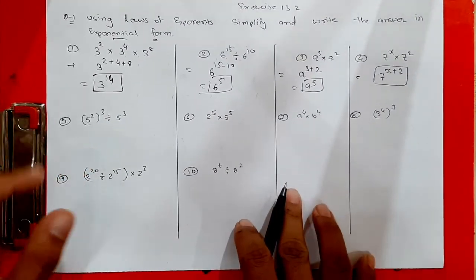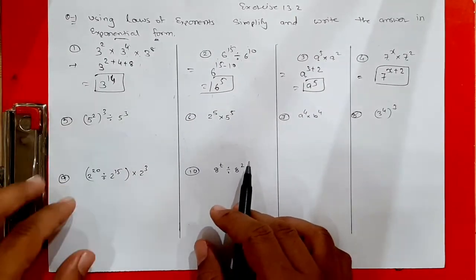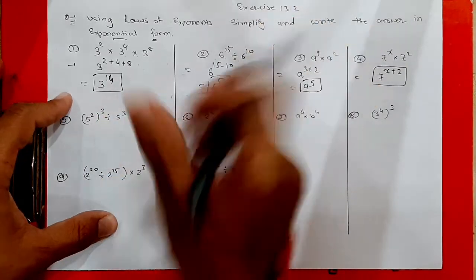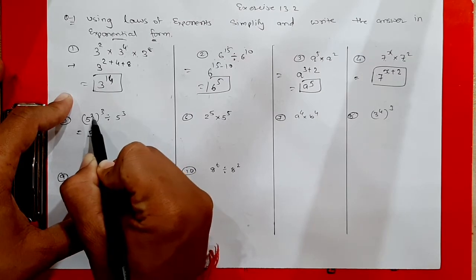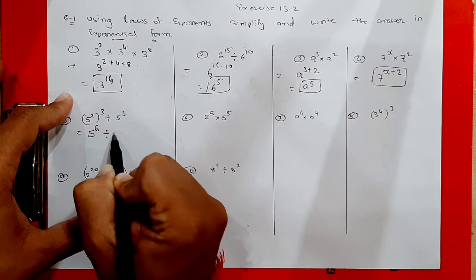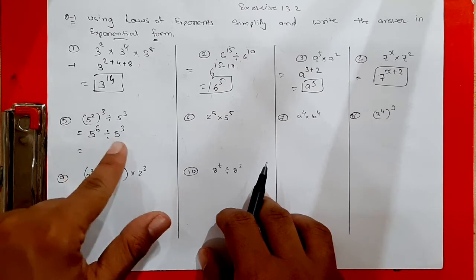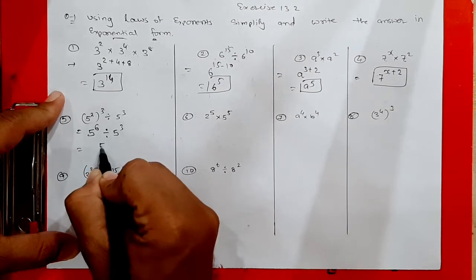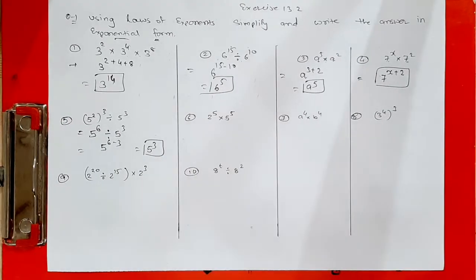Fifth question: (5 raised to 2) raised to 3, divided by 5 raised to 3. First solve the bracket — power of a power, so multiply: 2 times 3 equals 6, giving 5 raised to 6. Now divided by 5 raised to 3 — same base, division sign — subtract powers: 6 minus 3 equals 3, so the answer is 5 raised to 3.